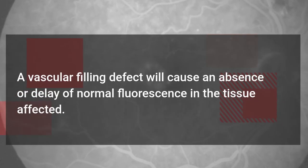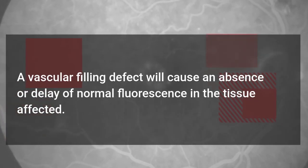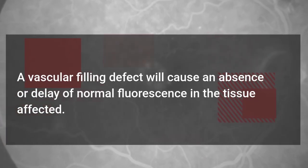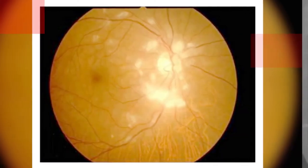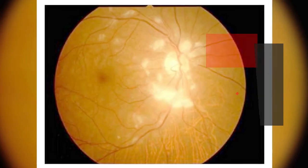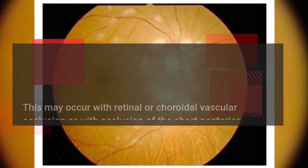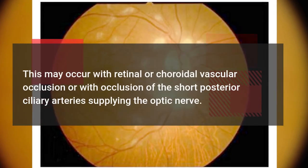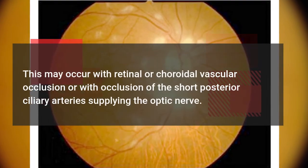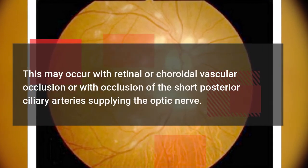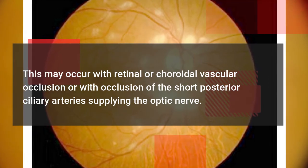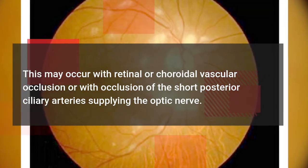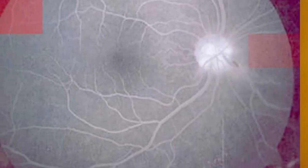A vascular filling defect will cause an absence or delay of normal fluorescence in the tissue affected. This may occur with retinal or choroidal vascular occlusion or with occlusion of the short posterior ciliary arteries supplying the optic nerve.